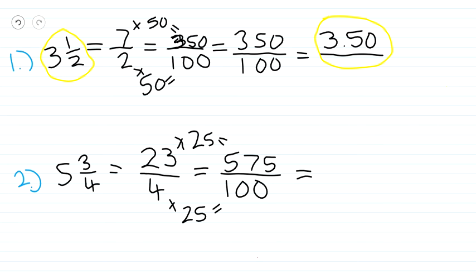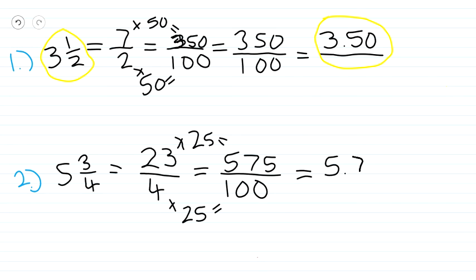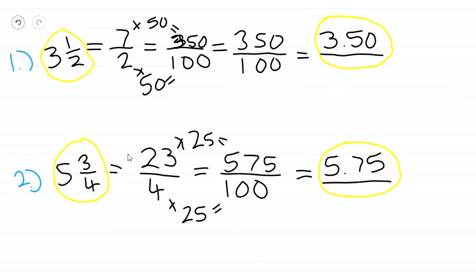The next step is to divide 575 by 100. Since 100 has two zeros, we take the invisible decimal point and jump two places to the left. Our answer is 5.75. So 5.75 is the decimal form of five and three-fourths.